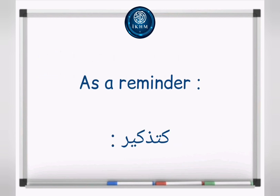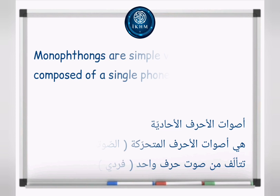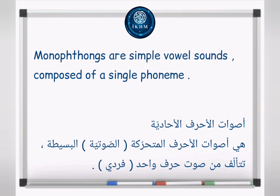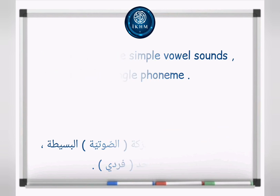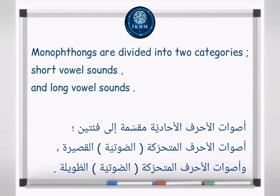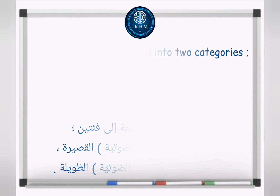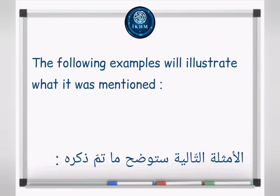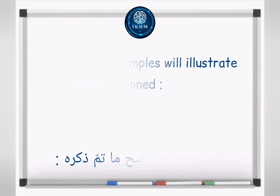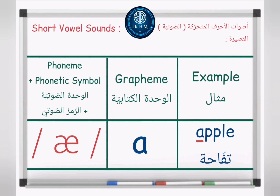As a reminder, monophthongs are simple vowel sounds composed of a single phoneme. Monophthongs are divided into two categories: short vowel sounds and long vowel sounds. The following examples will illustrate what was mentioned.